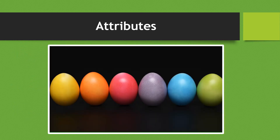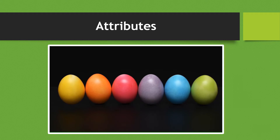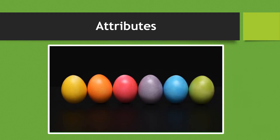An attribute is a quality that an item has. To better understand attributes, let's take a look at this example. With the eggs, they're all the same — the only attribute that's changing is the color from egg to egg.